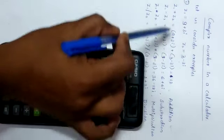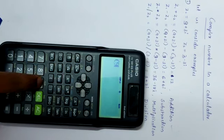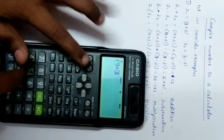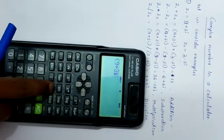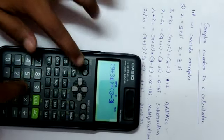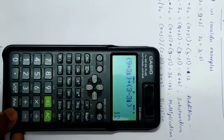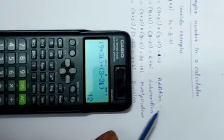First, we calculate addition of these two complex numbers. Click open bracket, then 9 plus 3, then the engineering button for i, close bracket, plus open bracket, 3 minus 3, engineering button for i, close bracket, then equals. This gives us 12, which is the addition of these two complex numbers.